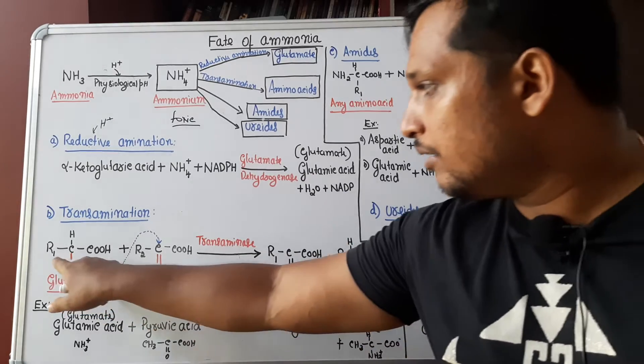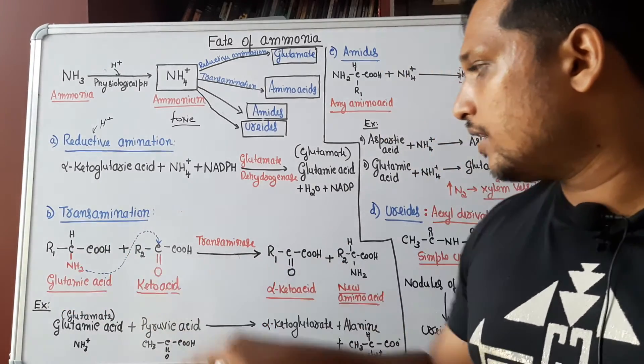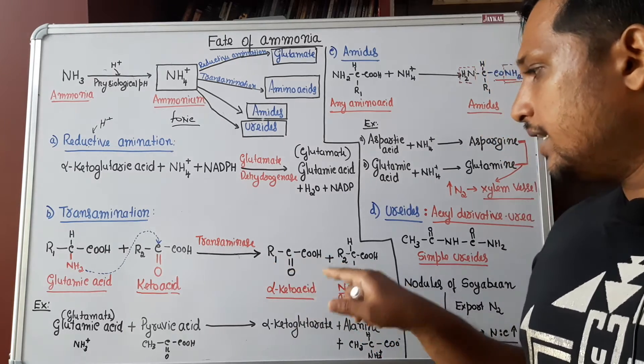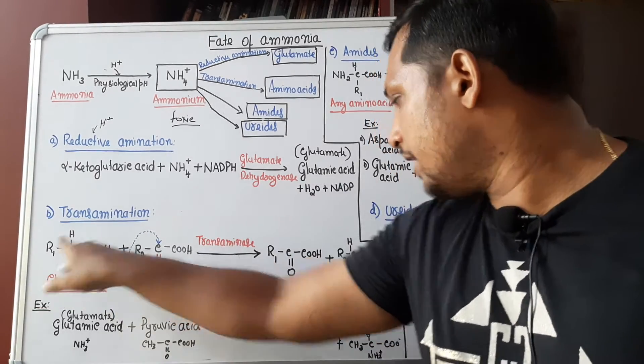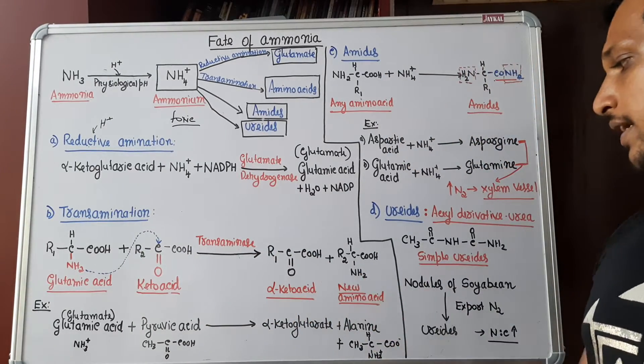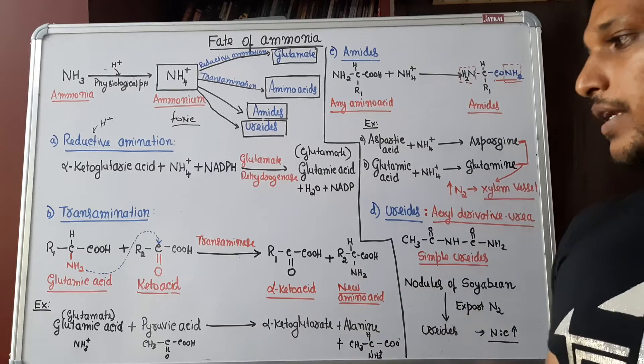How to write it easily? You will be writing amino acid with R1 and R2. While writing the product, just interchange R1 and R2. Where R1 is there, you write R2. Where R2 is there, you write R1. You will be getting alpha-keto acid and a new amino acid.